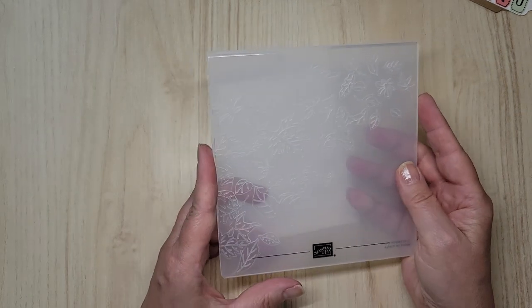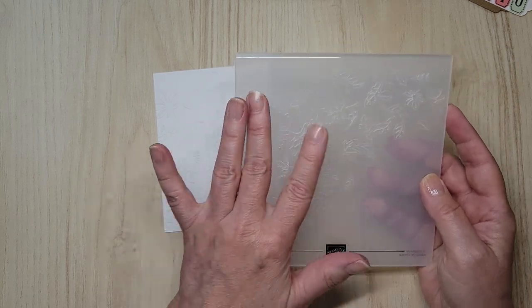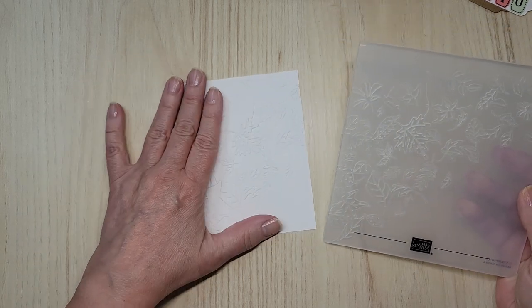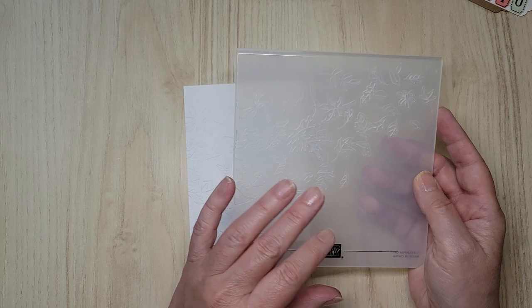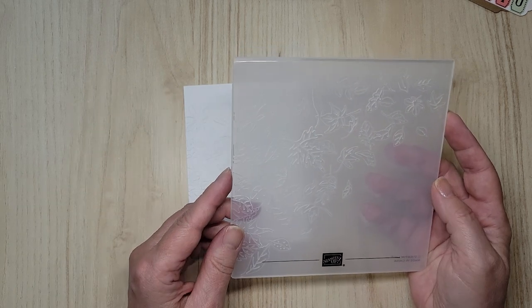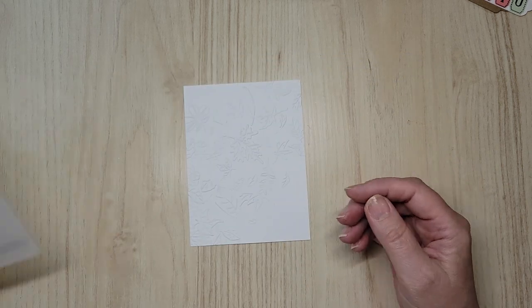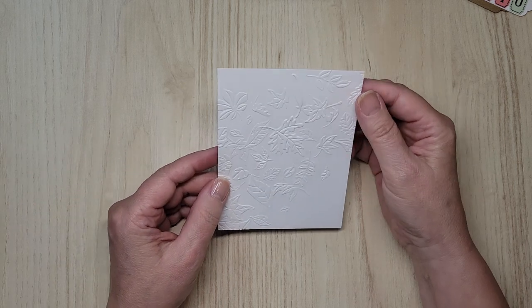But it is a really cool embossing folder, which you can also color and then run your paper through. And it will show up here. And to color it, you can use your sponge daubers and you can use your blending brushes. You can use a sponge, whatever you happen to have at home. So that is a 3D folder as well. So you know, you're getting a beautiful deep impression.